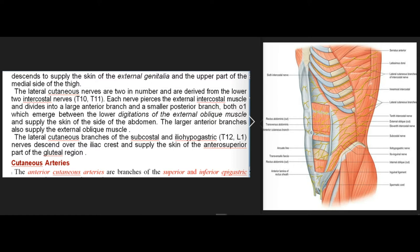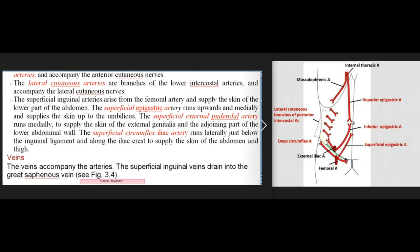The lateral cutaneous nerves are two in number and are derived from the lower two intercostal nerves. Each nerve pierces the external intercostal muscle and divides into a large anterior branch and a smaller posterior branch, both of which emerge between the lower digitations of the external oblique muscle and supply the skin of the side of the abdomen. The larger anterior branches also supply the external oblique muscle. The lateral cutaneous branches of the subcostal and iliohypogastric nerves descend over the iliac crest and supply the skin of the anterosuperior part of the gluteal region.